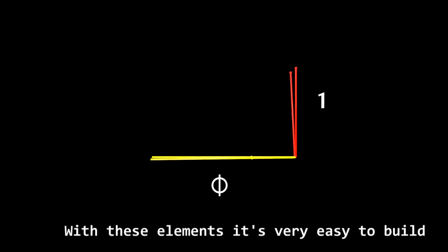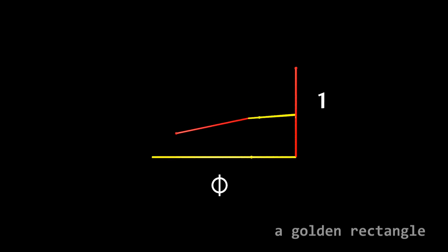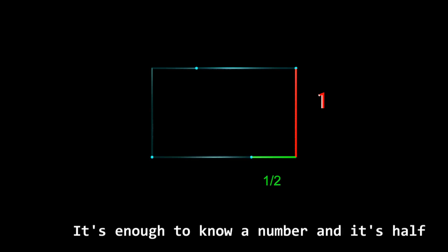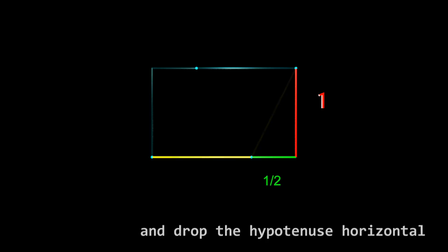With these elements, it's very easy to build a golden rectangle without having any knowledge about the existence of number 5. It's enough to know a number and its half, draw a right triangle, and draw the hypotenuse horizontal, right by the short side. Number 5 shows up.